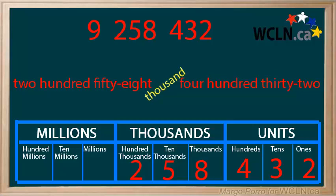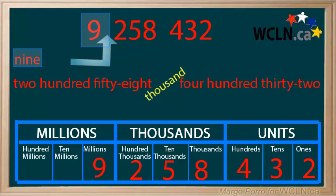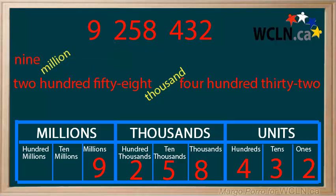As numbers get larger, the same rules apply. After the thousands come the millions. First, read the number or numbers in the millions period. This example has only one digit, a nine. Then, where there is a space, you know you need to say the period name: million.